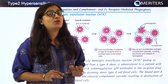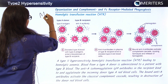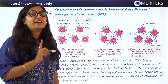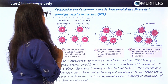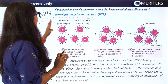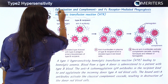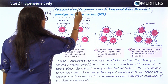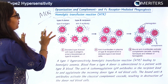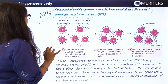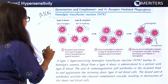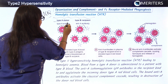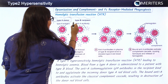An important MCQ example: the hemolytic transfusion reaction is an example of type 2 cytotoxic hypersensitivity reaction. The mechanism followed is opsonization and complement and FC receptor-mediated phagocytosis. Let's study a case where the donor is type A blood group and the recipient is type B blood group.